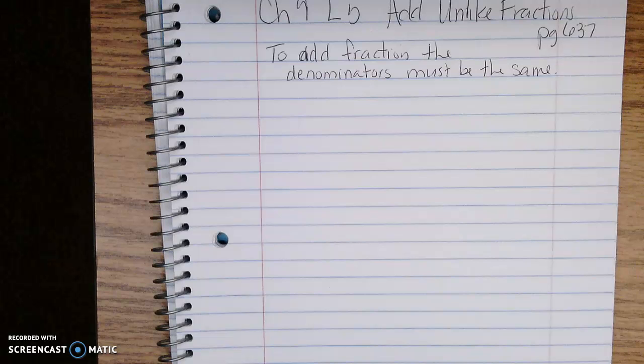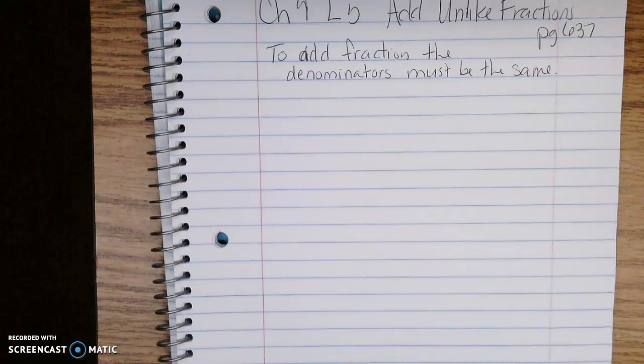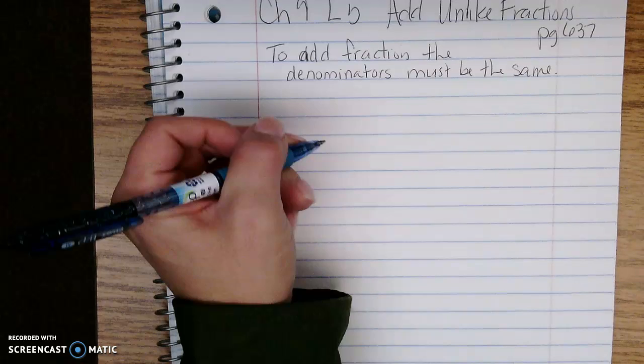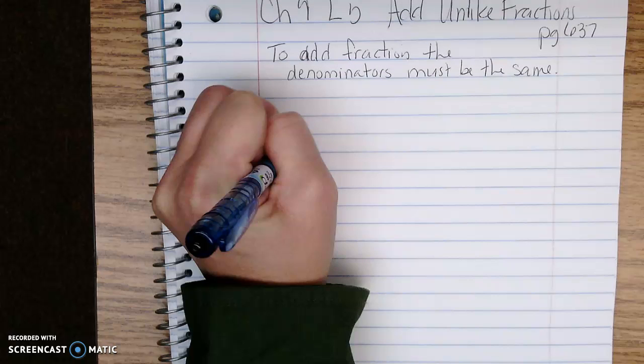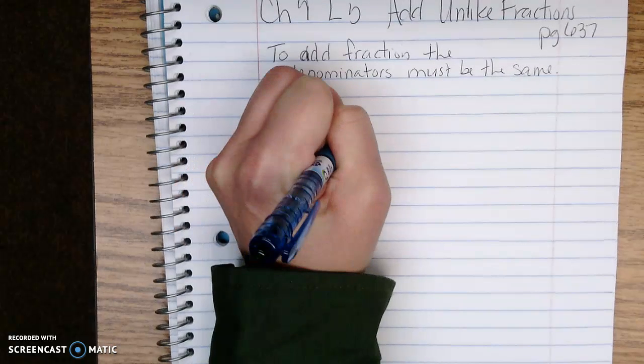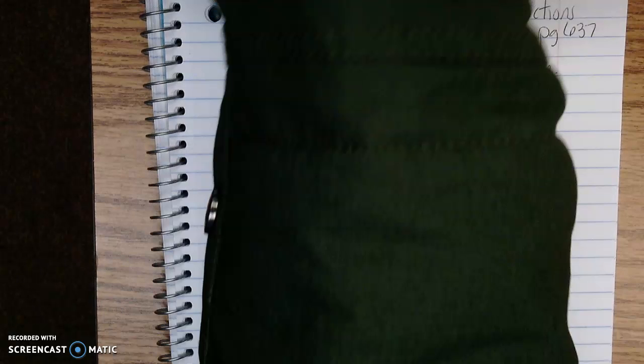If we look at page 637, example 1 says: In the morning an octopus swam for one-third of an hour. In the afternoon the octopus swam for one-fourth of an hour. For how much of one hour did the octopus swim all together?